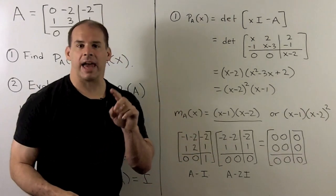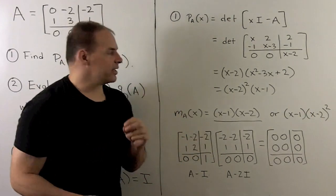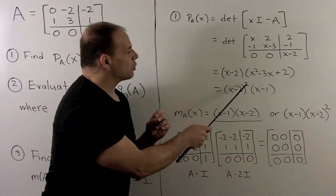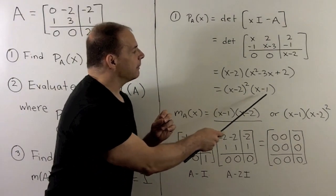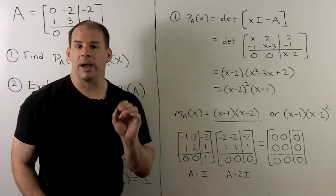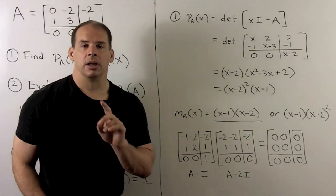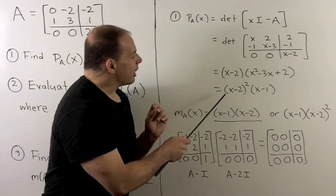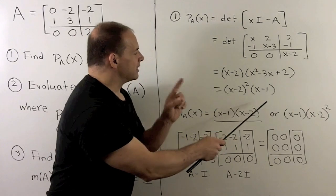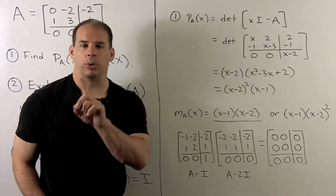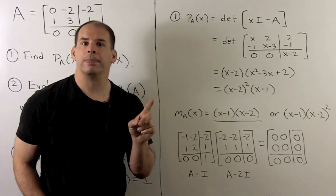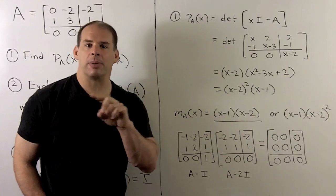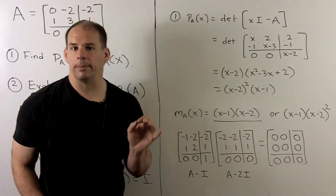By the Cayley-Hamilton theorem, if we take A minus 2I squared times A minus I, we get the zero matrix out. There may be a smaller polynomial that satisfies that equation. If we put A in and get the zero matrix out, if we can find the smallest monic polynomial that does that, that's what we call the minimal polynomial.